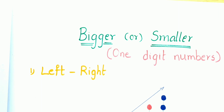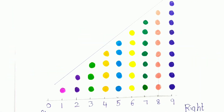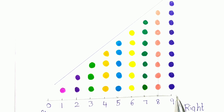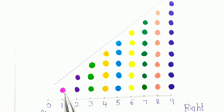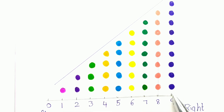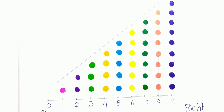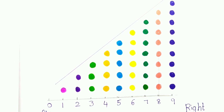Here we have three concepts. The first one is left side and right side. In this concept we have to draw a horizontal line marking from 0 to 9, and draw any shapes according to the number. For 1 you have to draw only 1 shape.